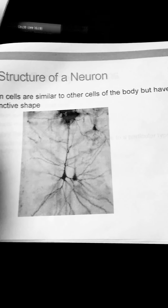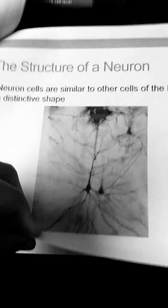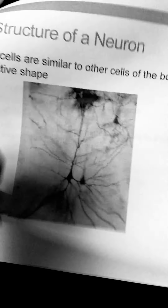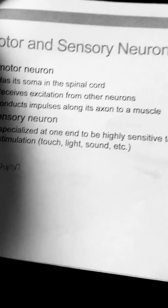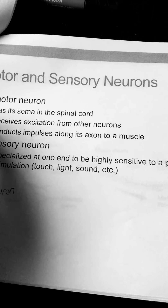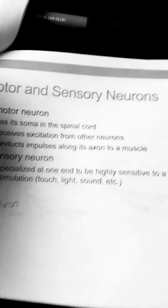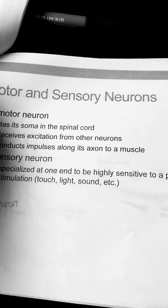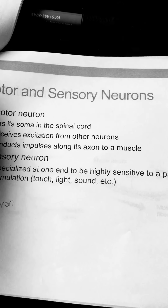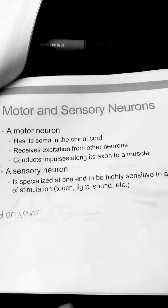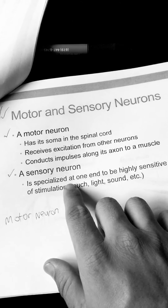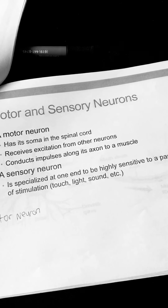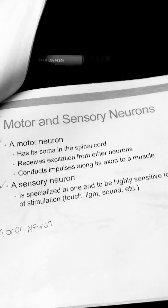Neuron cells are similar to other cells of the body but have a distinctive shape — there are many different shapes. They're electrically charged. A motor neuron handles motor functions, while a sensory neuron handles sensory functions. The motor neuron has its soma in the spinal cord — if you damage your spinal cord, you can't really move. It receives excitation from other neurons and conducts impulses along its axons to muscles. The sensory neuron is specialized at one end to be highly sensitive to a particular type of stimulation: touch, light, or sound.